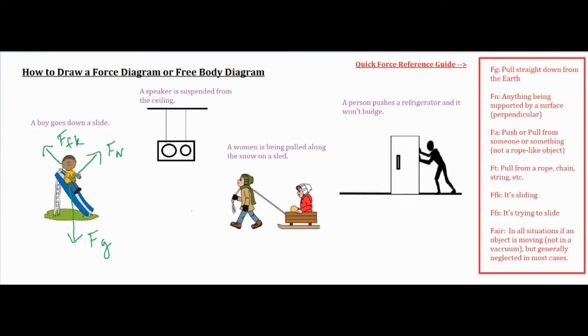The very last one, air resistance. So basically in all situations where someone is moving and they're not in a vacuum, there is technically air resistance, but a high majority of the time it's not included. In this diagram, technically it would be in here and it would be pointing the same direction as the force of kinetic friction, opposing his motion, but because it's not very significant, it's not included in most of the diagrams. Okay, so that concludes our first one.